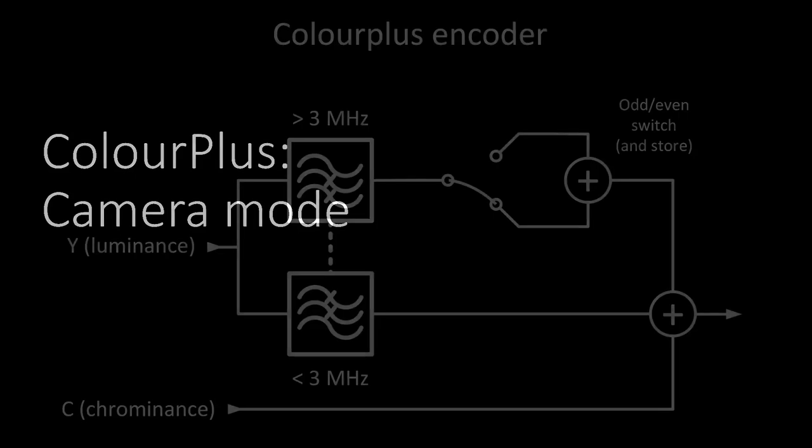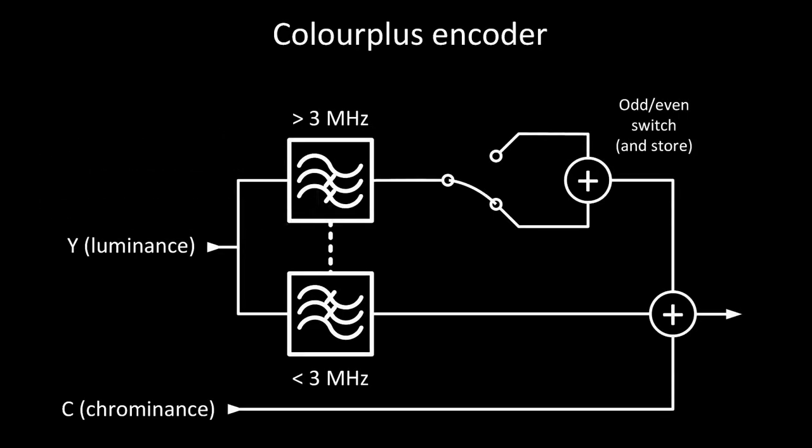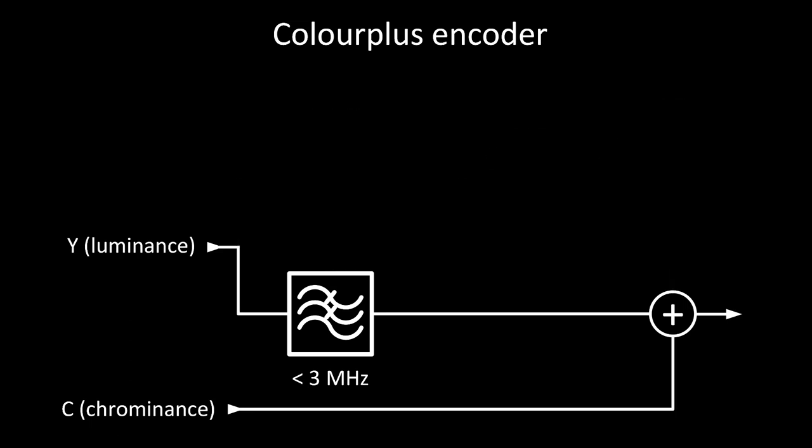What about camera mode ColorPlus? In this scenario, the encoder continuously compares the chrominance information of each adjacent odd and even line. Where it matches, the same technique used in film mode applies. But where there is no match — when the image has changed between fields — the encoder simply filters out any luminance detail above 3MHz, leaving the decoder with no ColorPlus to decode and the display with no possibility of luminance and chrominance crosstalk. There are lots more details in practice, but you get the idea.